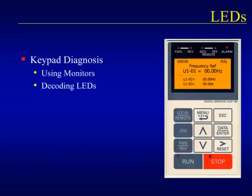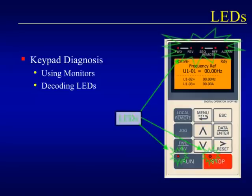Also critical to the task of keypad troubleshooting is the status of the LEDs on the keypad, which will give us clues to the drive's current state. There are five LEDs along the top of the keypad and two LEDs that are part of the run and stop buttons. Knowing what each LED represents will be helpful in knowing how the drive is functioning.